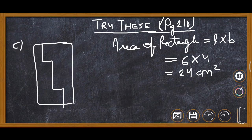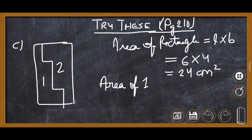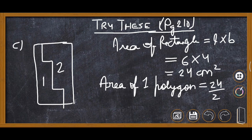This is the third part of the same 'Try These.' The figure is divided into two equal parts — this is the first part and this is the second part. So the area of each polygon is 24 divided by 2, which equals 12 centimeter square.